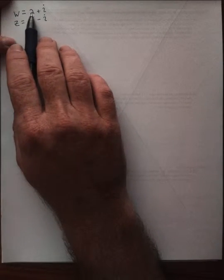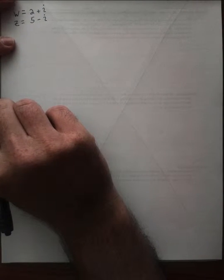I have written here two complex numbers, W and Z. They have a real component and a complex component. The first one is 2 plus i, and the second one is 5 minus i.